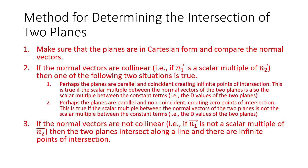Here's our method for determining the intersection of two planes. We make sure the planes are in Cartesian form and compare the normal vectors. If the normal vectors are collinear — i.e., if the first normal is a scalar multiple of the second normal — then the planes could be parallel and coincident, creating infinite points of intersection. That would be true if the scalar multiple between the normal vectors also applies to the constant terms. Or the planes could be parallel and non-coincident, creating zero points of intersection, if that scalar multiple does not apply to the constant terms.